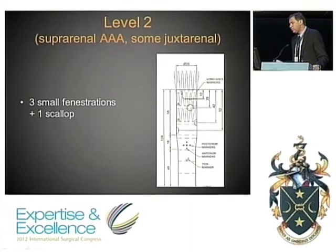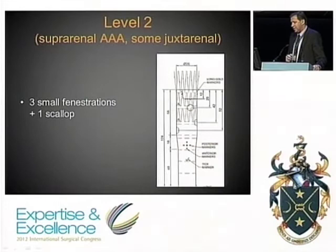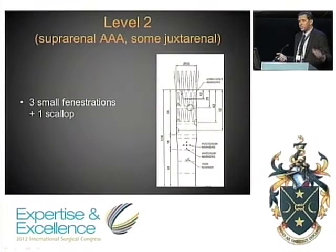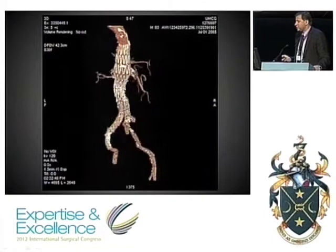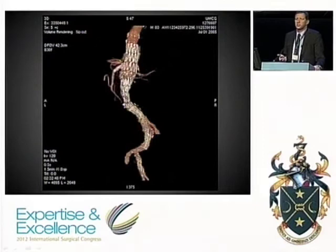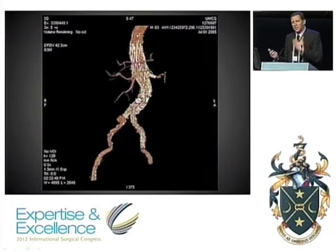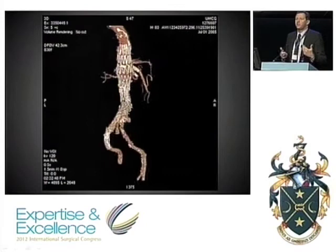Moving to Level 2, after two to three years we decided to add a fenestration for the superior mesenteric artery and a scallop for the celiac trunk, progressing towards juxtarenal and suprarenal aneurysms. The technique is essentially the same, except you also need to catheterize and stent the mesenteric artery, which requires lateral viewing. In 2012, we don't need robots, but we do need better imaging systems — hybrid suites with up-to-date image quality to perform these procedures.